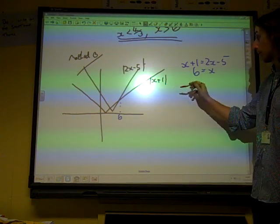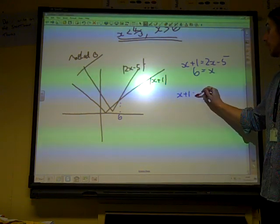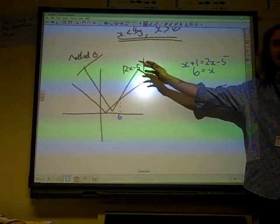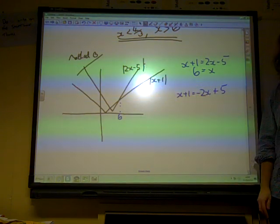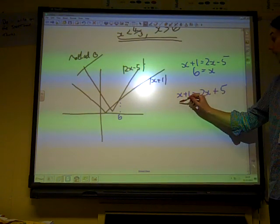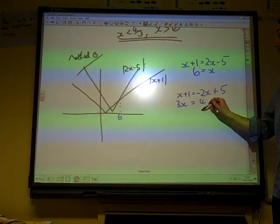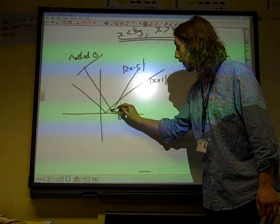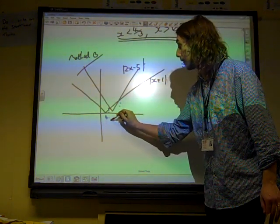If we do a positive and a negative branch, so x plus 1 is equal to minus 2x plus 5, because if we do the negative of all of that, it would be minus 2x plus 5. That's going to give us 3x equals 4. So, x is 4 thirds. So, that point there is at 4 thirds.